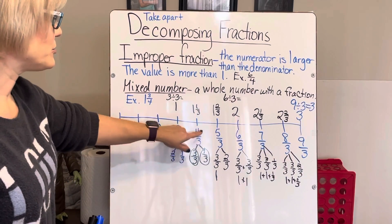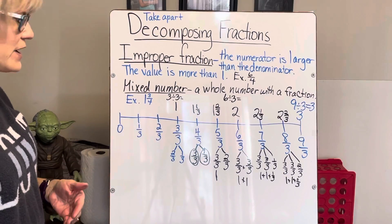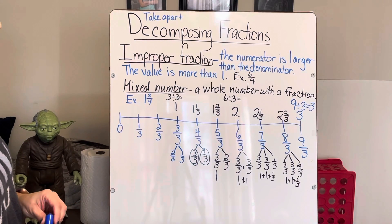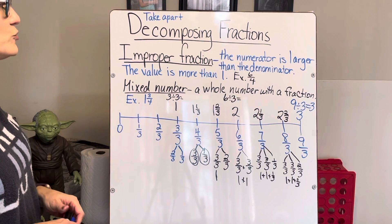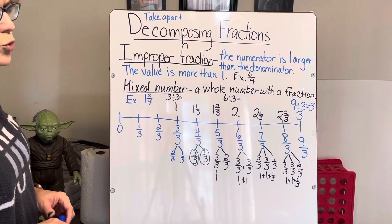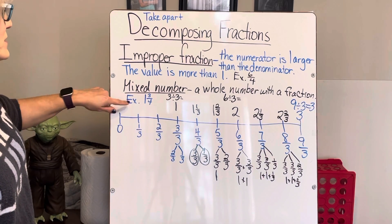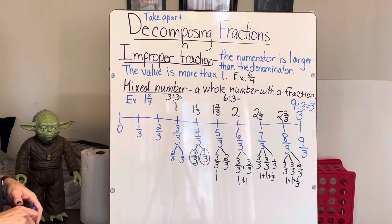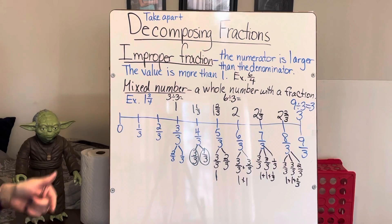You can use decomposing fractions to change an improper fraction to a mixed number. When we're adding and subtracting fractions and you get an improper fraction as an answer, you now know how to change it to a mixed number. An improper fraction is when the numerator is larger than the denominator and the value is more than one. A mixed number is a whole number with a fraction, like one and three-fourths. Keep watching, keep thinking, always stay curious — see you next time!